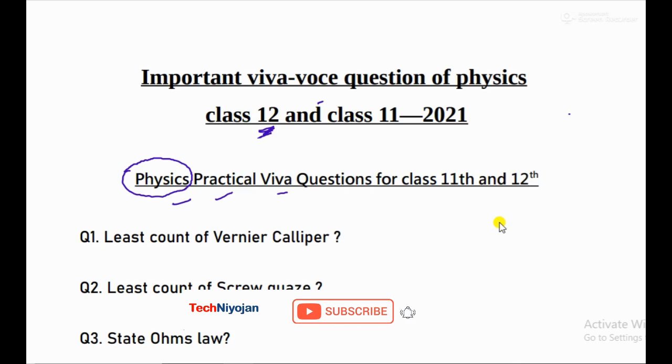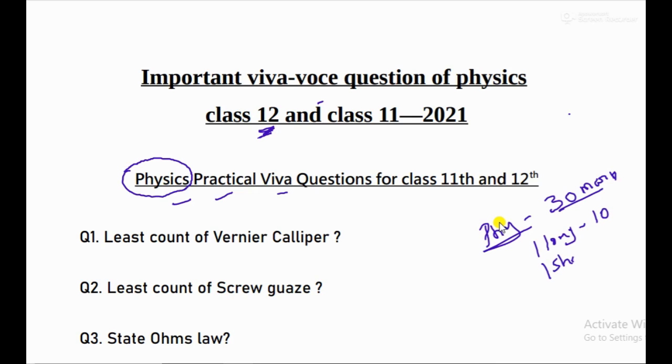Actually, you know students, physics practical exam is 30 marks. One long experiment is 10 marks, one short experiment is 5 marks. This year, the new syllabus and new paper pattern has come.